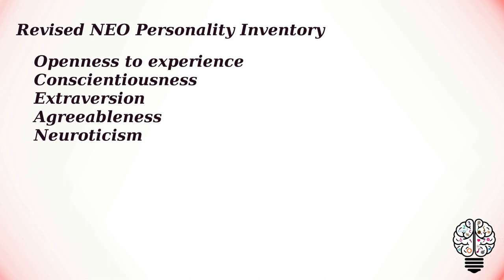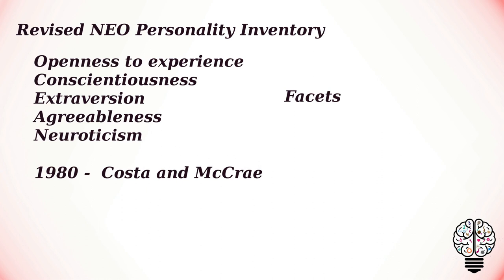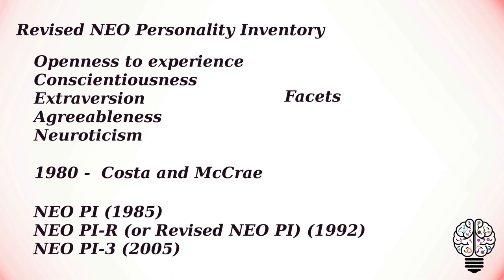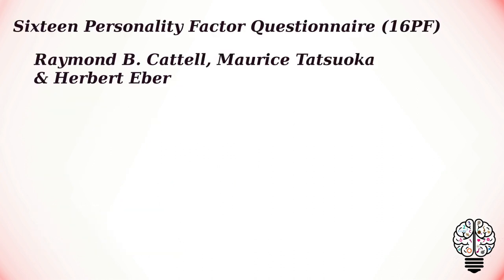The next is the Revised NEO Personality Inventory, which examines a person's Big Five personality traits: openness to experience, conscientiousness, extraversion, agreeableness, and neuroticism. In addition, this test has six subcategories of each Big Five personality trait called facets. It was initially published in 1980 by Costa and McCrae, who further continued to publish three additional versions in 1985, 1992, and 2005.